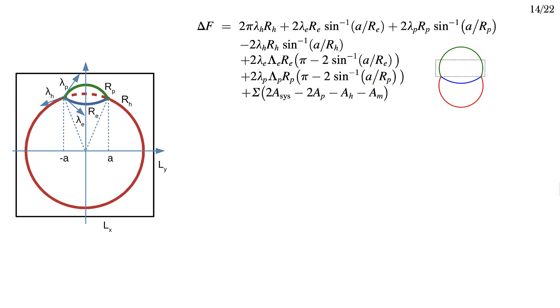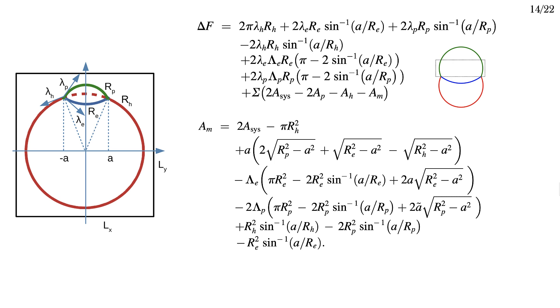When I calculate the area change, it looks like this. The first line is simply the area of the system with a bare hemifusion diaphragm, and the rest accounts for the pore.